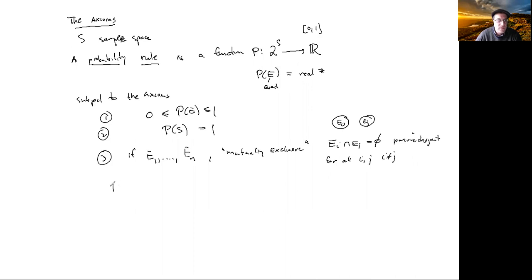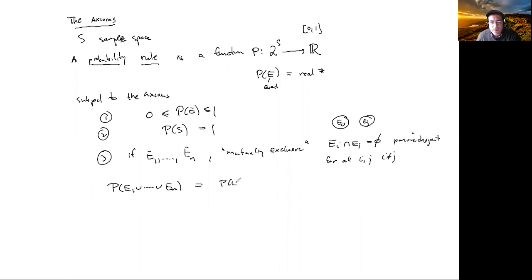So the statement is: if you have this mutually exclusive list of events, then P of E_1 union all the way up to E_n equals P of E_1 plus P of E_2, all the way up to P of E_n. It adds. In other words, P can be rewritten as the sum from i equals 1 to N of P of E_i.